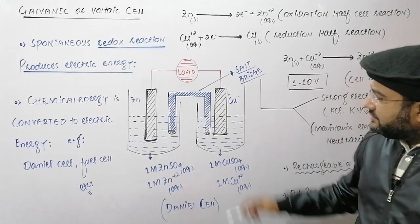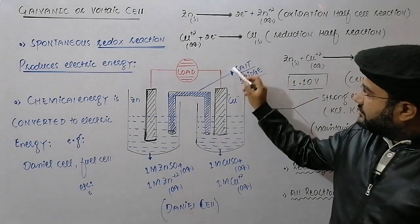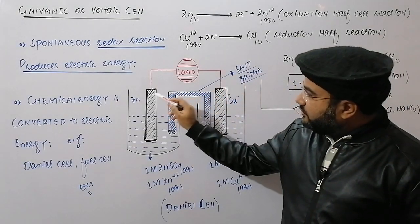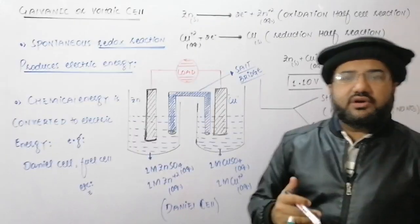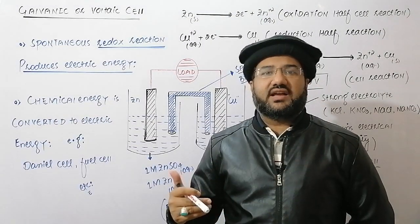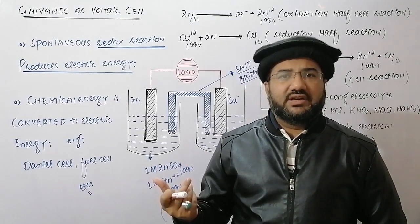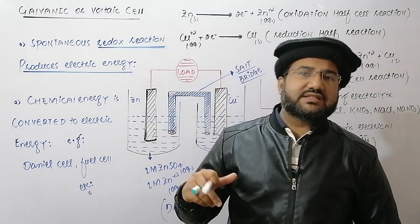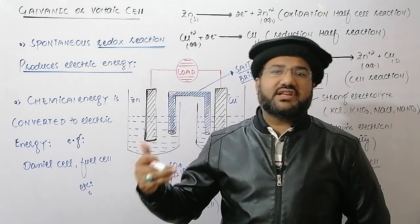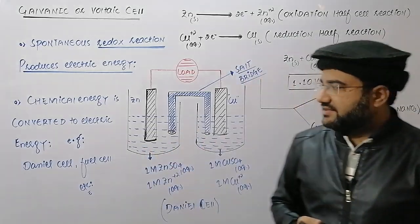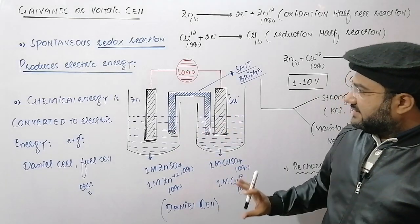These two electrolytes are electrically connected through a salt bridge, while the electrodes are connected through the load. The load is something which consumes the electric energy — it may be a small bulb or a small fan, basically anything which can consume electric energy. This is the construction of the Daniel cell.